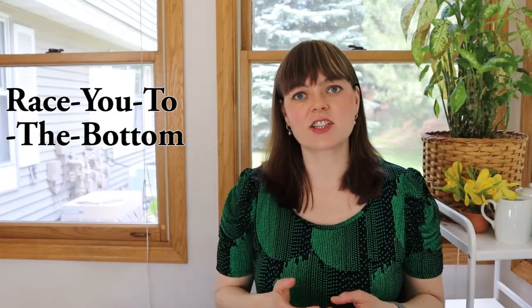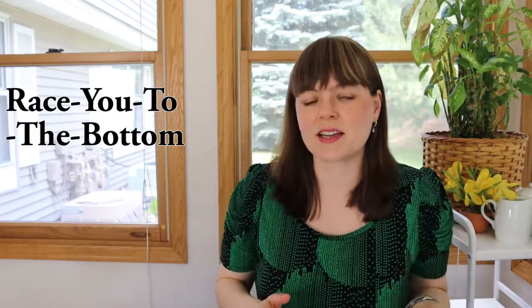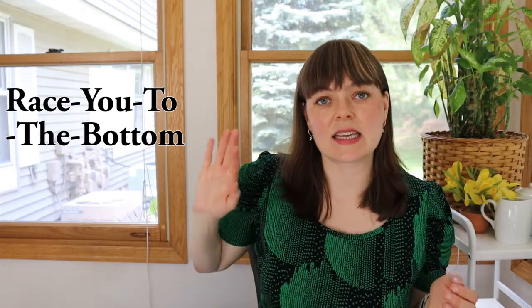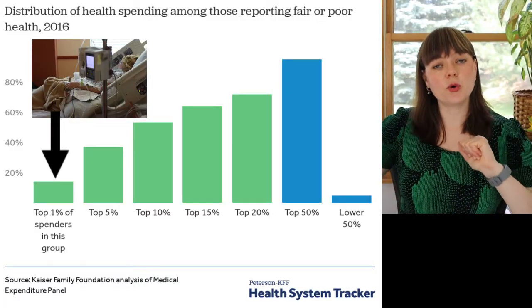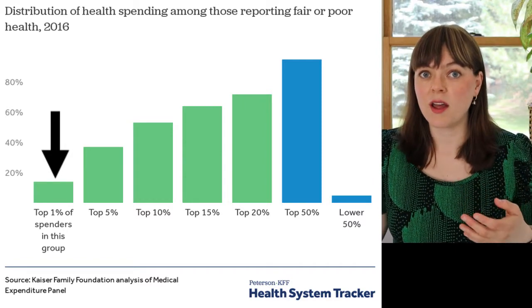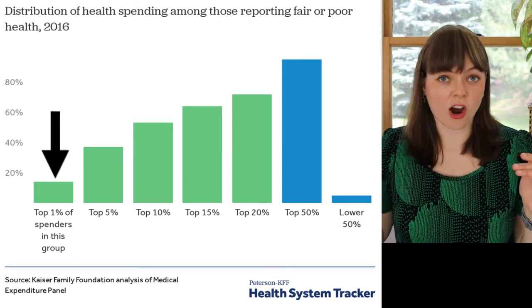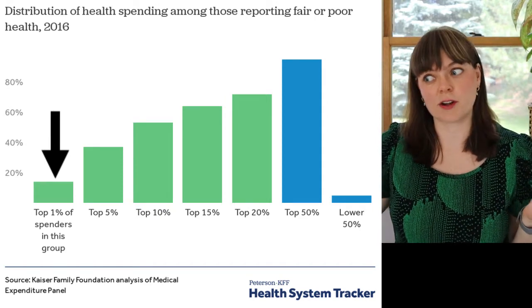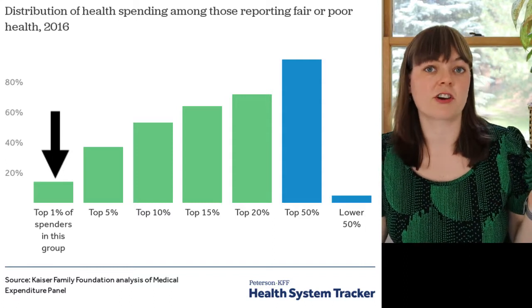With healthcare and adverse selection — and race to the bottom in particular — you have the concept of health insurers competing to keep out the top 1% of healthcare spenders. If you can avoid that top 1%, you can cut costs and prices for everybody else by about 20%. If you can avoid the top 5% of healthcare spenders, you can cut prices in half.